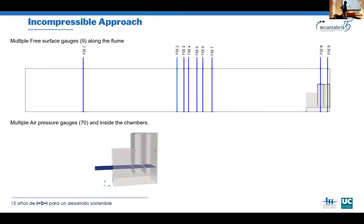We placed multiple free surface gauges around the wave flume but plot results only from those two inside the chamber. We also placed around 70 air pressure sensors but plot those where we have experimental data for comparison.